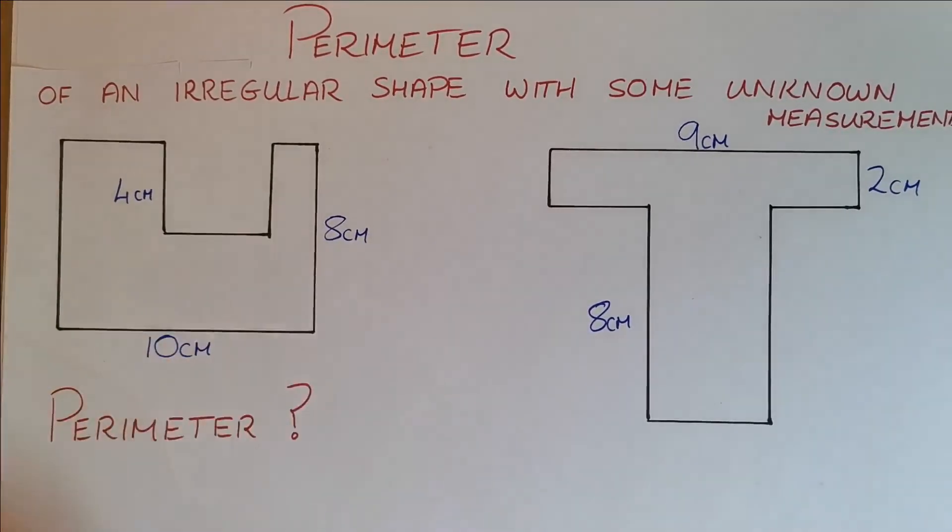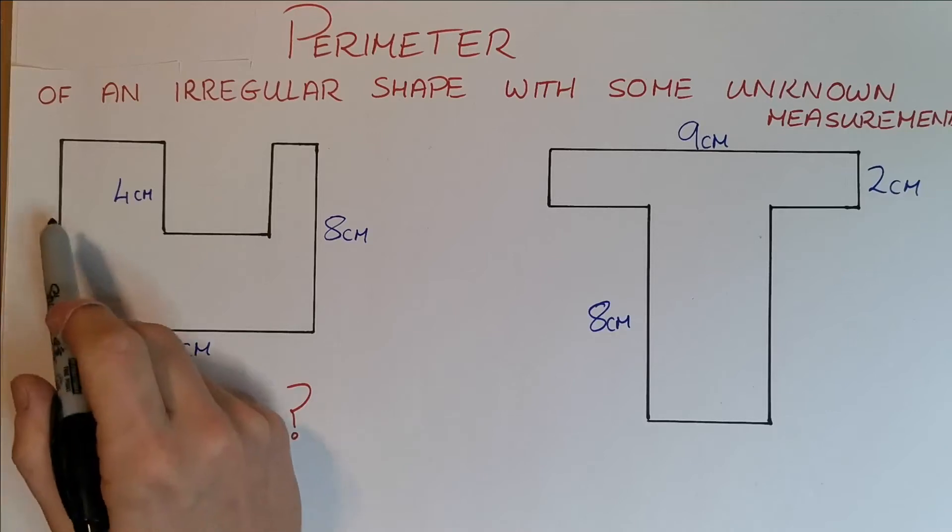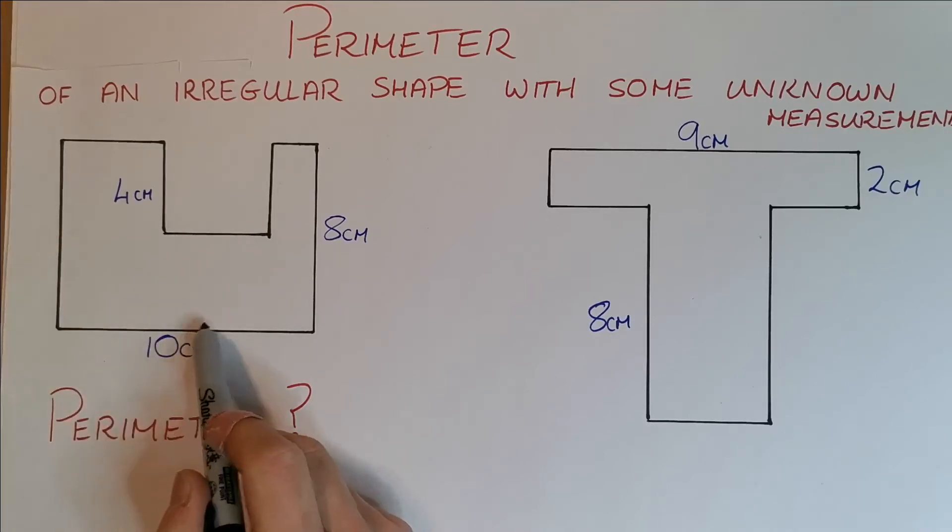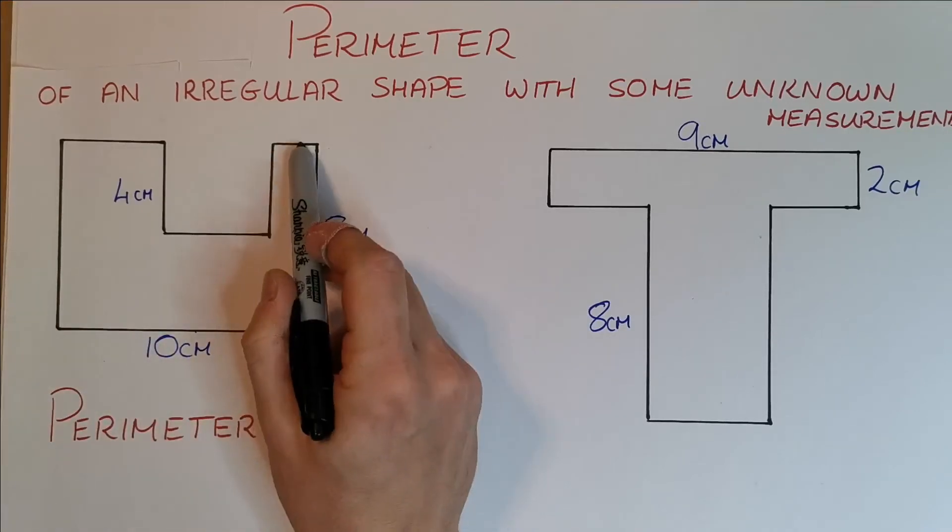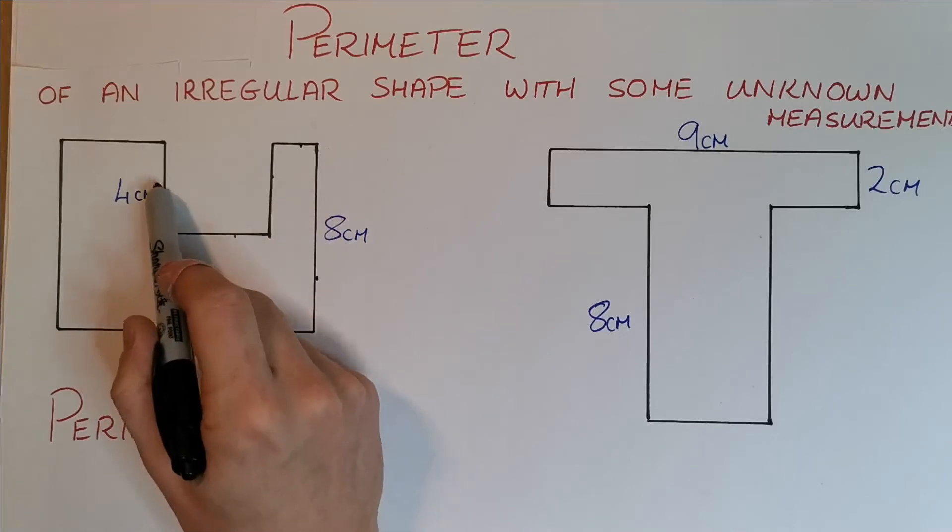So let's look at this one on the left here first. So we have this shape and let's count how many sides we have to the shape first. So we have, let's start from here with 1, 2, 3, 4, 5, 6, 7, 8.